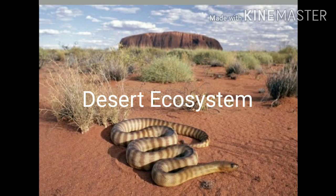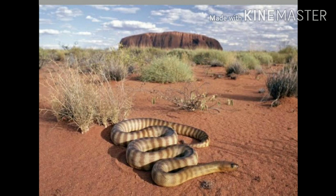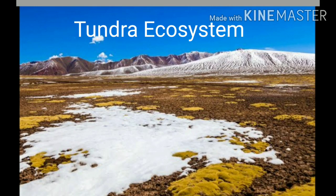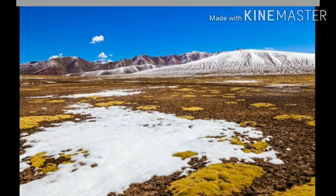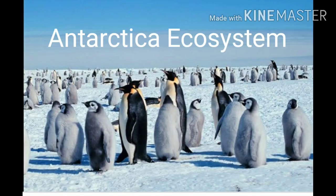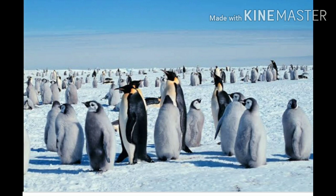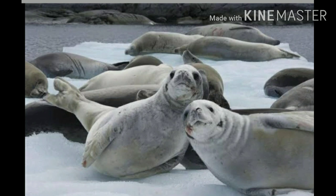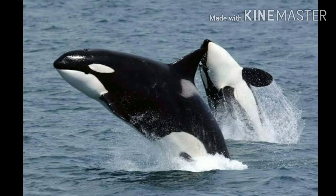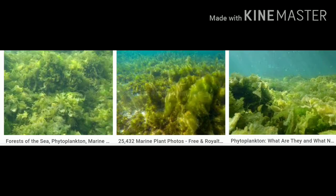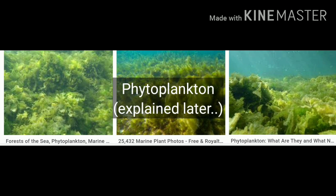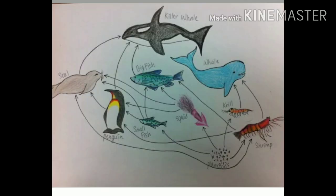In a desert ecosystem we find sand, rocks, insects, reptiles, plants and shrubs. In a tundra ecosystem we find snow-covered peaks, treeless and frozen soil. And in the Antarctic ecosystem we find ice, penguins, seals, whales, sometimes killer whales, and phytoplankton. Here we also have the food chain of the Antarctica ecosystem — from phytoplankton all the way up to killer whales.